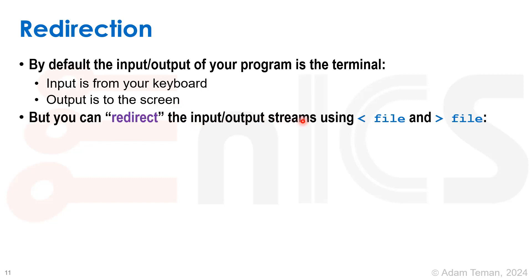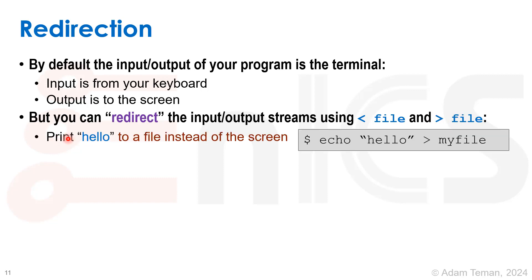We can redirect input/output streams using the less-than and greater-than symbols. When I do less-than and a filename, the input will be redirected to come from that file instead of the keyboard. When I do greater-than and a filename, the output will be redirected to be written to a file instead of the screen. For example, if I want to print the string 'hello' to a file, I can write 'echo hello > myfile'. If the file doesn't exist, it will create it; if it does, it will overwrite it.